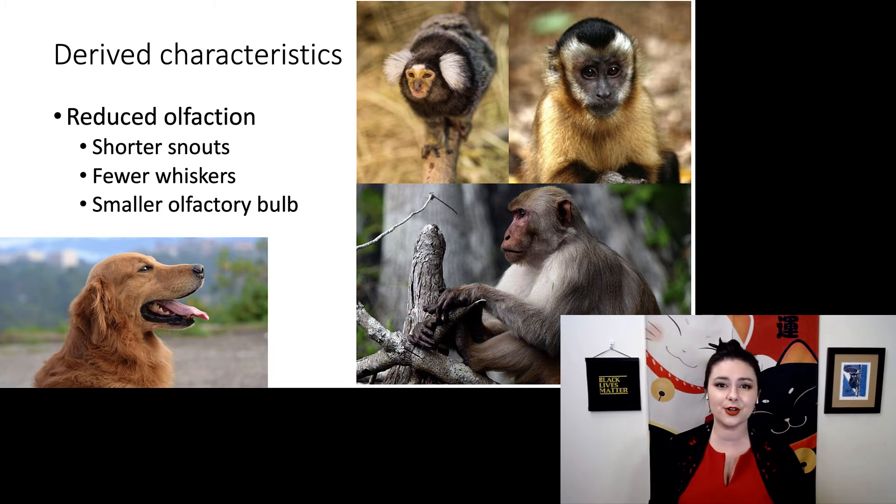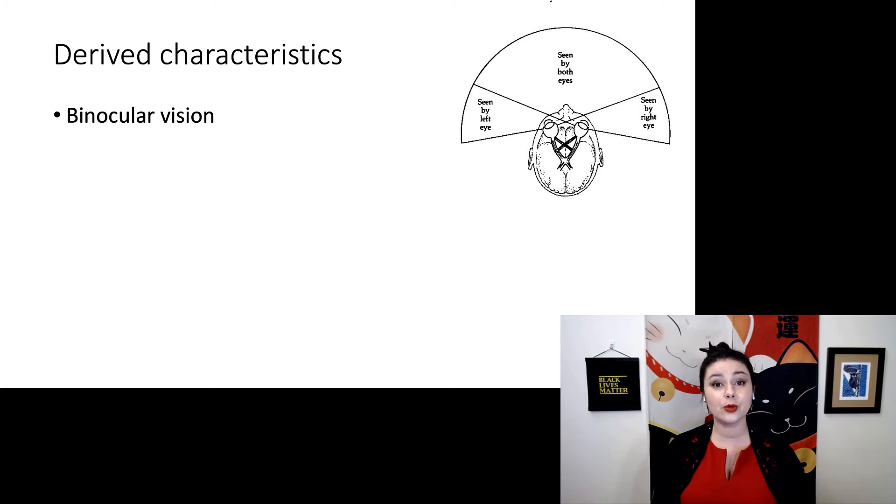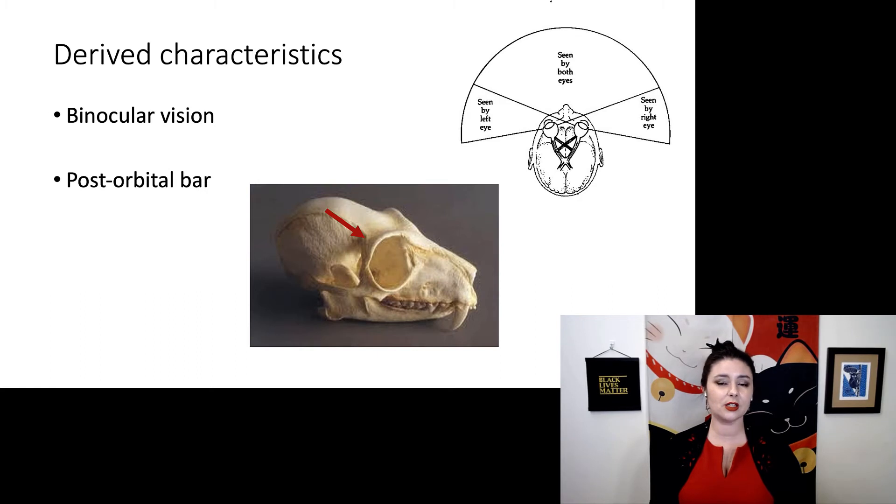Instead of focusing on our nose, we instead focus on our eyes. We have something called binocular vision, where both of our eyes are facing forward, so we have a large field of view that overlaps between both eyes. This gives us high acuity vision and a little bit better depth perception. We also have something called a post-orbital bar. We have a complete ring of bone around our eyes. We see this in all primates, and you can see there's that highlighted bar in that image there. It happens a little bit differently in different primate groups, which we will talk about when we get into those groups.